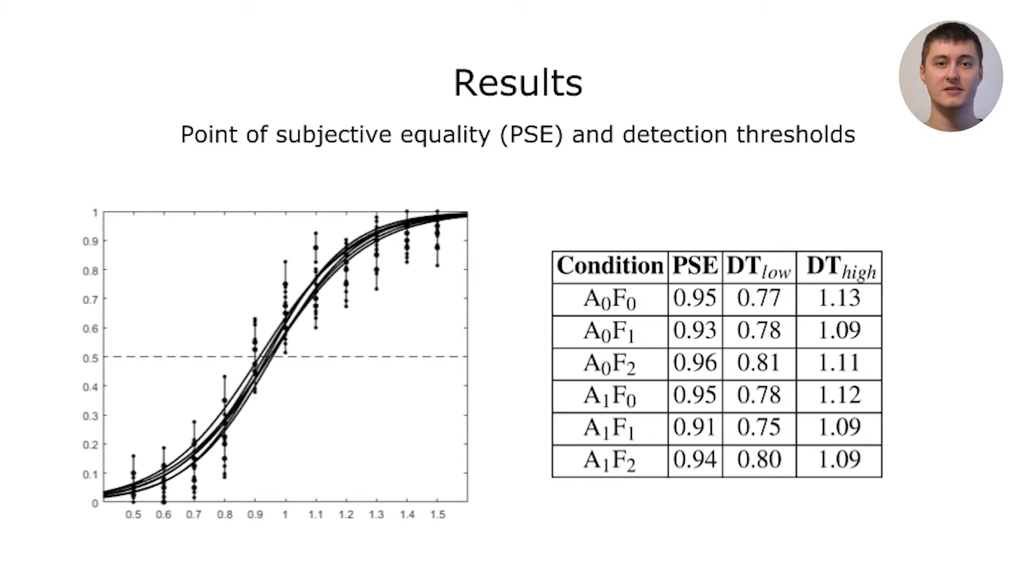We hypothesized that adding spatialized audio would decrease users' ability to detect rotation gains, especially in scenarios where visuals provide limited spatial information. If this was true, the results should have revealed more extreme DT lows and DT highs from the conditions with audio, particularly when involving dense fog. However, this pattern is not present in our current results. Instead we found similar detection thresholds across all conditions.